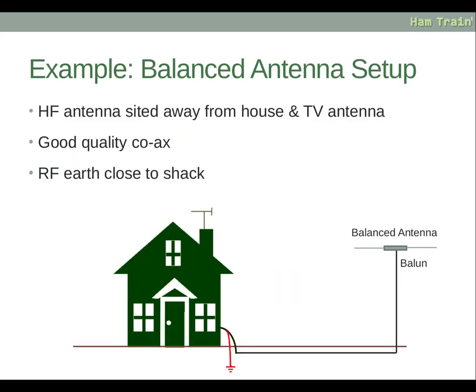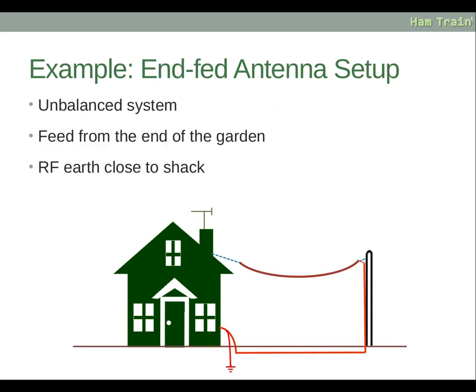Here's an example of a balanced antenna setup: the HF antenna is sited away from the house and TV antenna, giving a good distance from anything susceptible to interference. Good quality coax is used, and an RF earth is placed right next to the shack, so it's only a short distance for the RF to travel. Here's also an example of an end-fed setup — an unbalanced system fed from the end of the garden rather than at the house, so signals at the feed point are nowhere near the house, and the RF earth is again close to the shack. This is another good setup.